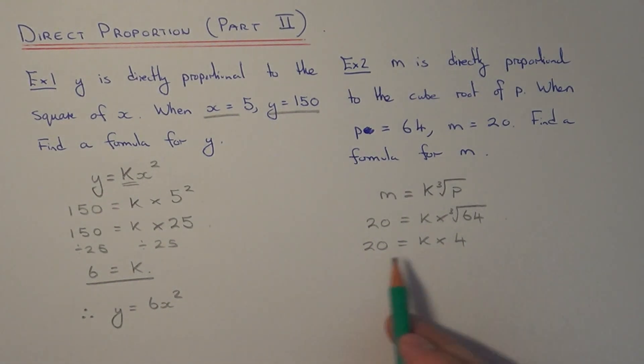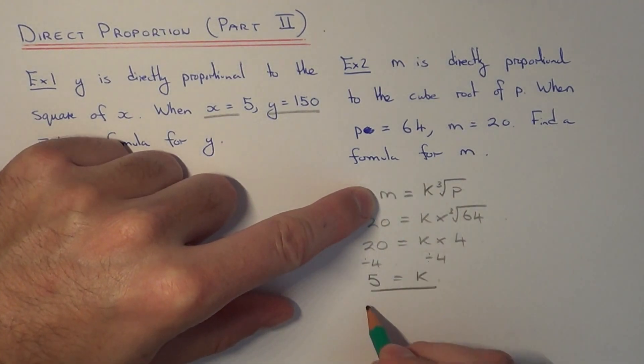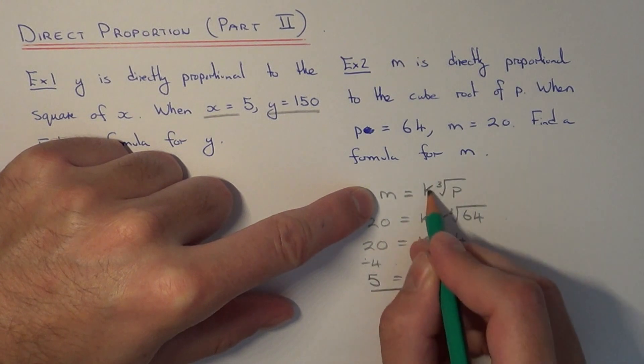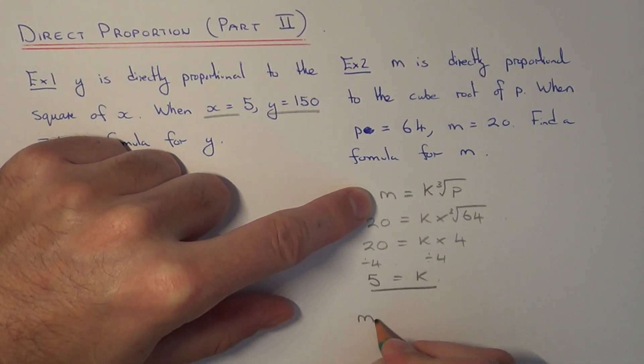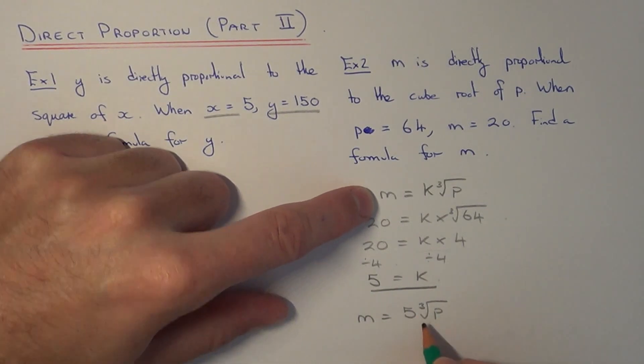We'll solve this equation by dividing both sides by 4. So 20 divided by 4 is 5, and that is equal to k. So our constant of proportionality is 5. Our final answer will be m equals 5 cube root of p.